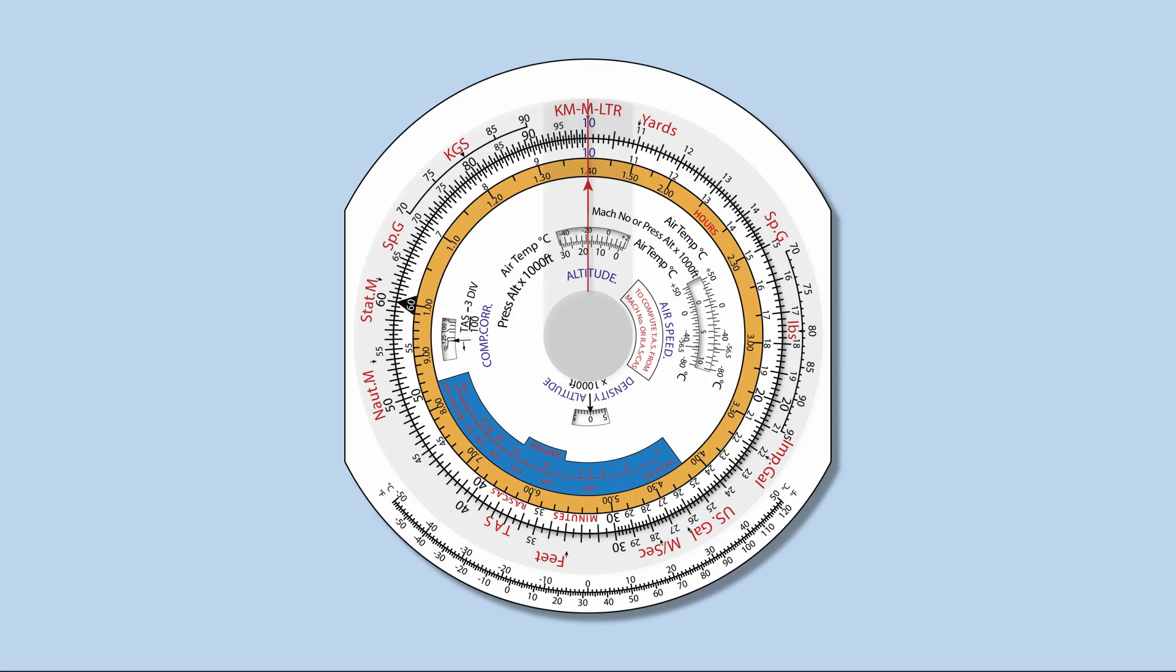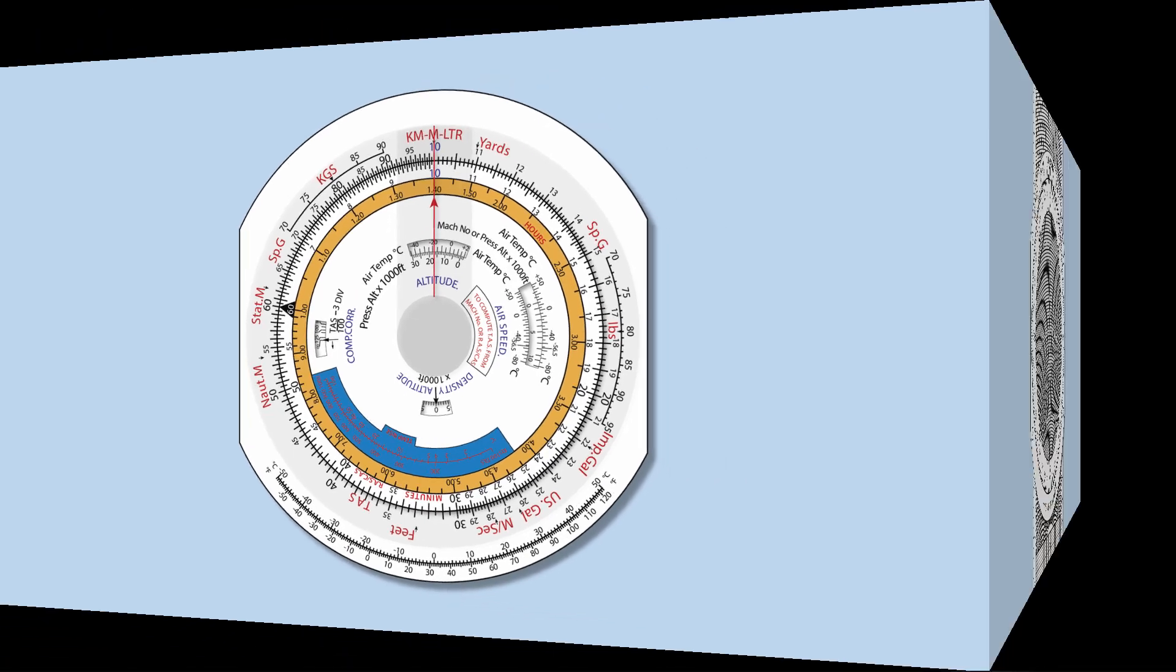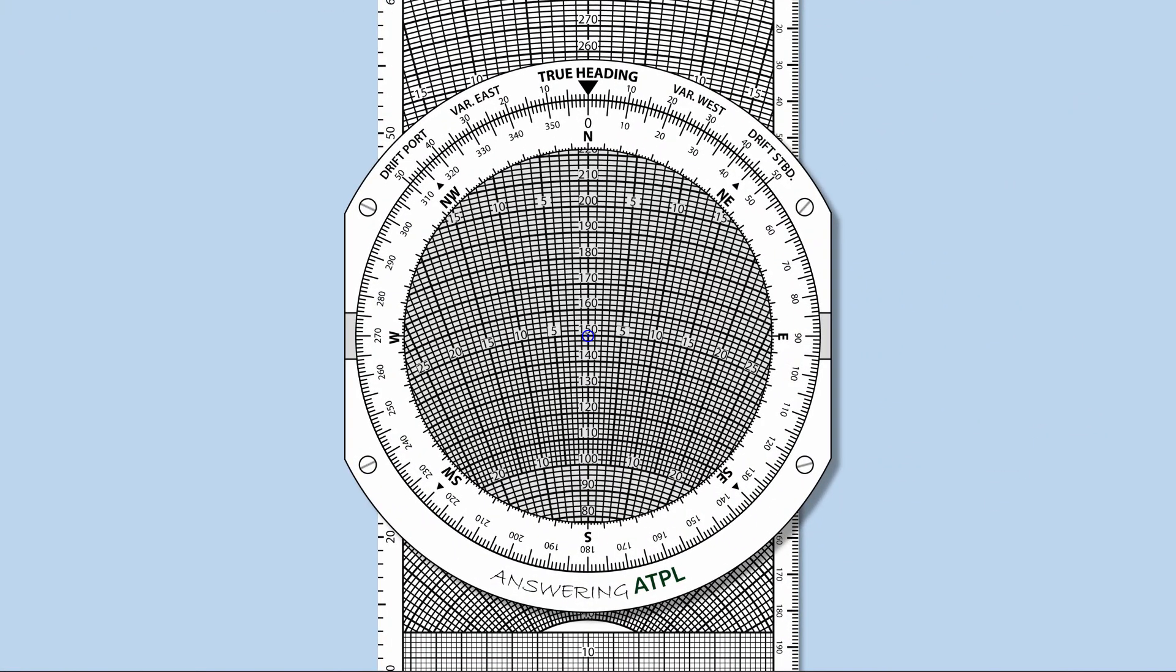The flight computer is used to solve navigational and flight planning problems quickly and easily. In this video series, we will focus on CRP5 flight computer produced by Pooley's Flight Equipment. The first face is the computer face, and on its back is the second face known as the wind face.